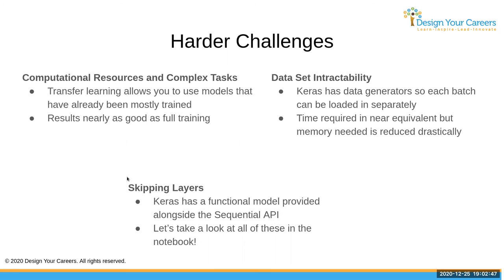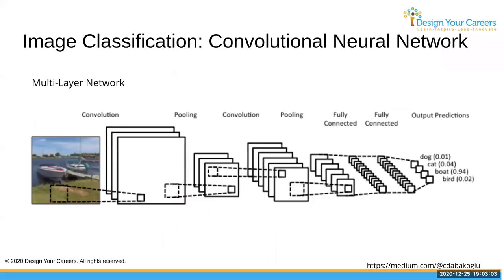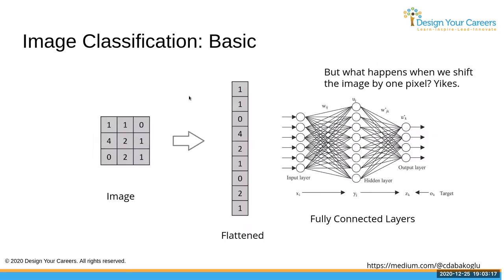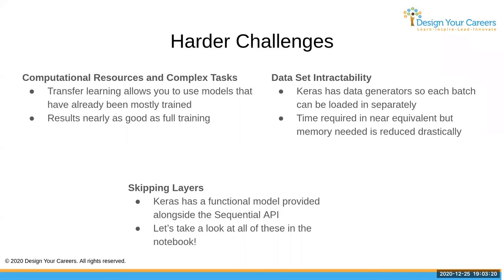Another issue is your dataset may be hundreds of gigabytes in size. Keras has data generators as Python generator functions - an example is in the attached notebook. The final challenge is skip layers, which transform a linear convolutional network by allowing connections to skip from the first layer directly to the third layer. We're not going to go through skip layers, but Keras has a way to do that using the functional model - that's also in the notebook.